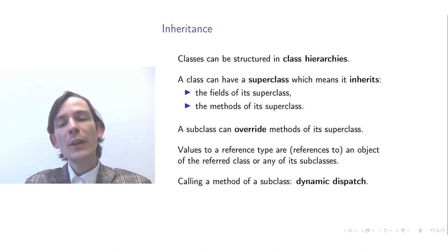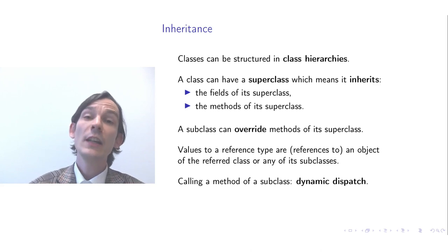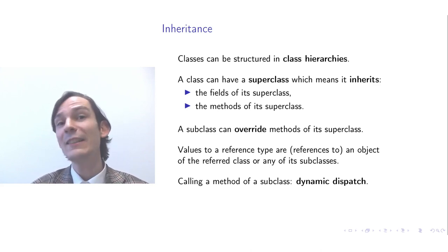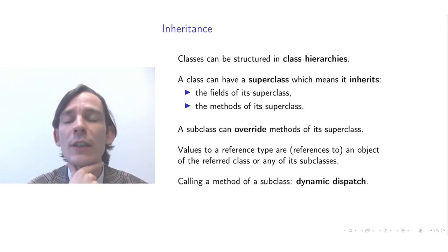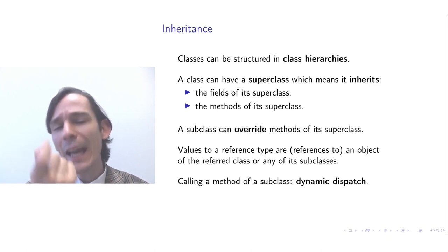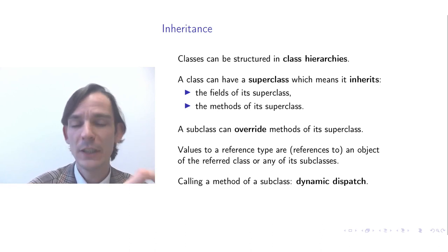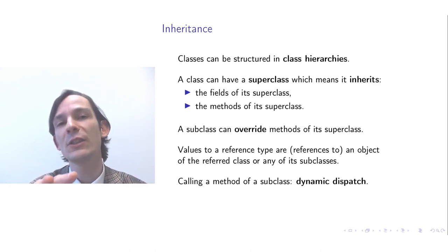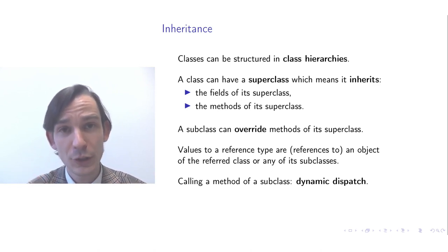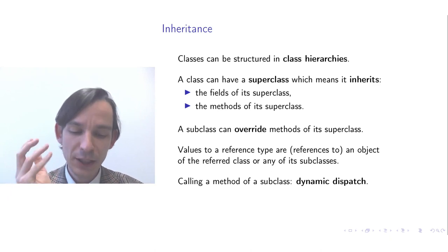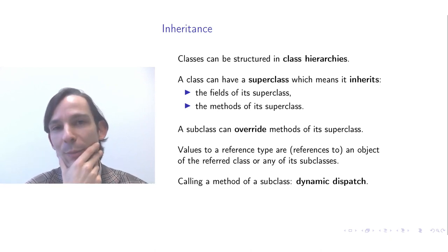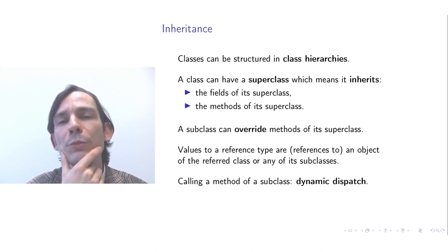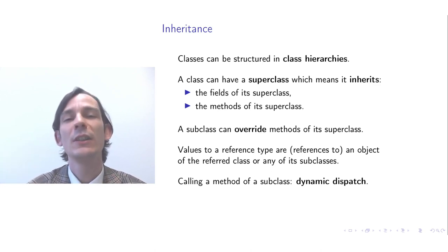Whenever you call a method on a class, there is a mechanism called dynamic dispatch, because you do not know statically from looking at the program text what is the actual implementation of a method until runtime. Dynamic dispatch is used to implement method overriding: whenever you call a method on an object, the most specific and refined behavior declared in the subclass is then performed.